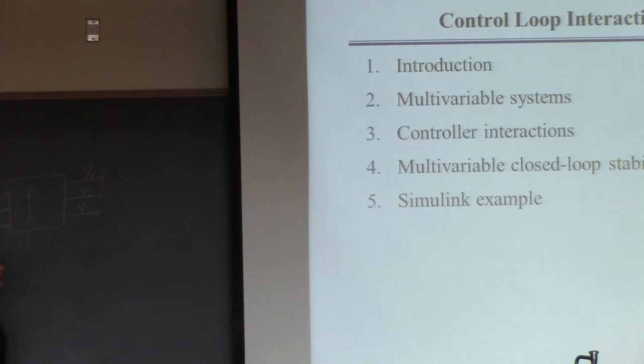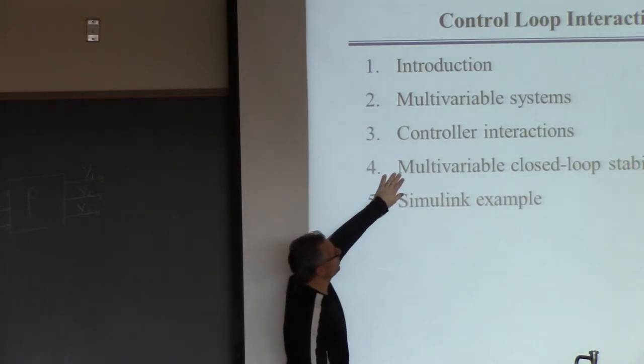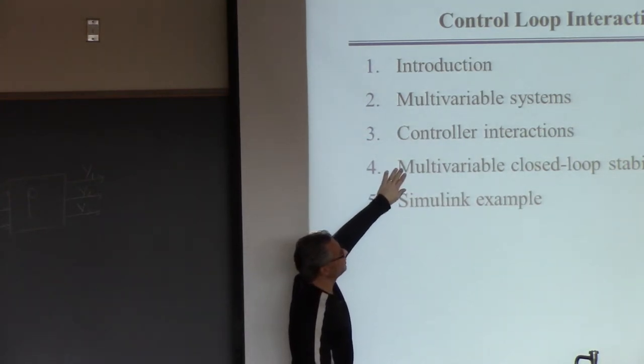These interactions between controllers can be negligible, substantial, or even devastating depending on the situation. The next lecture is intended to get you to mitigate those interactions by proper selection of how you do this pairing. I'll also talk a little about stability of these multivariable systems and give a brief example in Simulink.